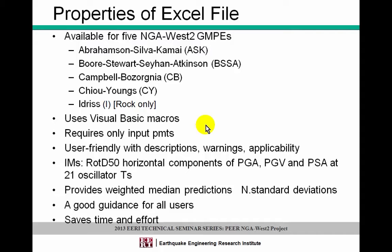I embedded functions in this spreadsheet, so for each individual GMPE it creates a function with the input parameters that go into the code. All you need to do is enter the input parameters in the main sheet and you will see the median predictions. It only requires the input parameters, but you will need to know what you're doing — we are assuming that users are familiar with GMPEs.